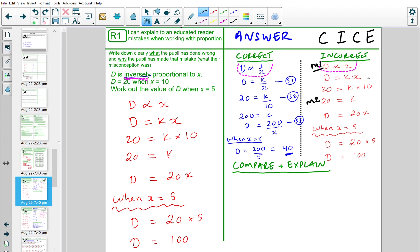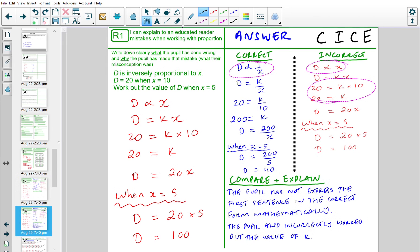So, that's the two mistakes that they've made. Now, for the compare and explanation part, this is what you could have written. The pupil has not expressed the first sentence in the correct form mathematically. First sentence I'm talking about is this one here. That has not been expressed mathematically correct. And then the second mistake, as we touch on, is this. To find the k value, they would have needed to divide by 10 on both sides, but they've just simply eliminated the 10 on the right-hand side and haven't done anything to the left-hand side. So, that's the two mistakes that they have made.